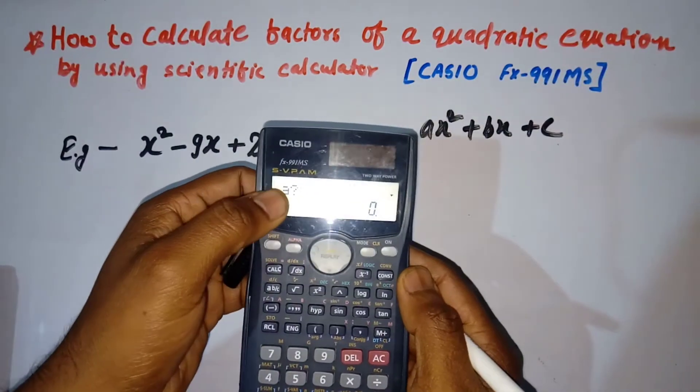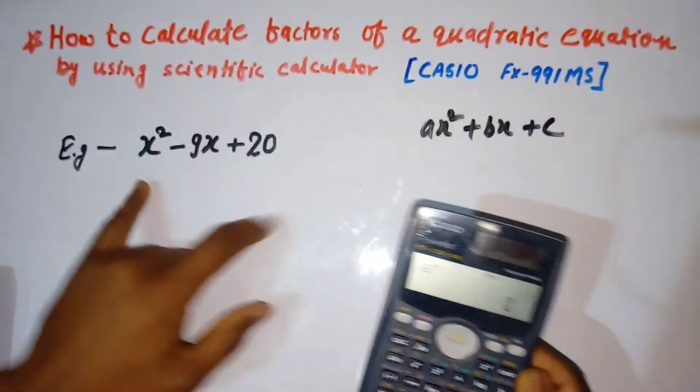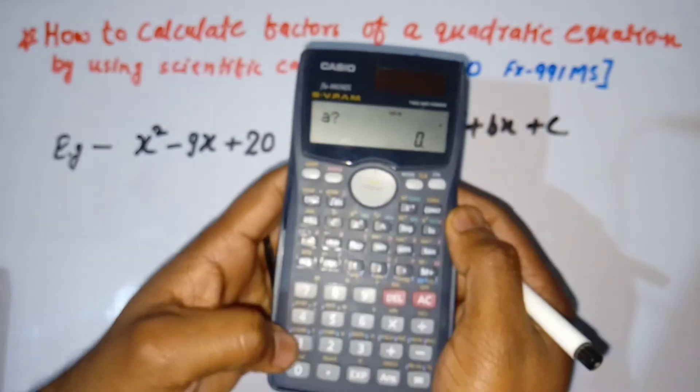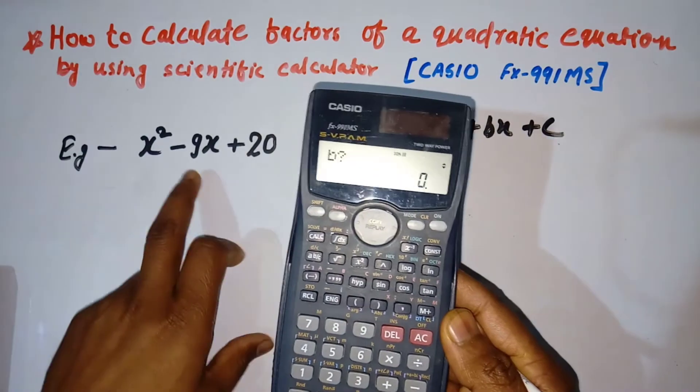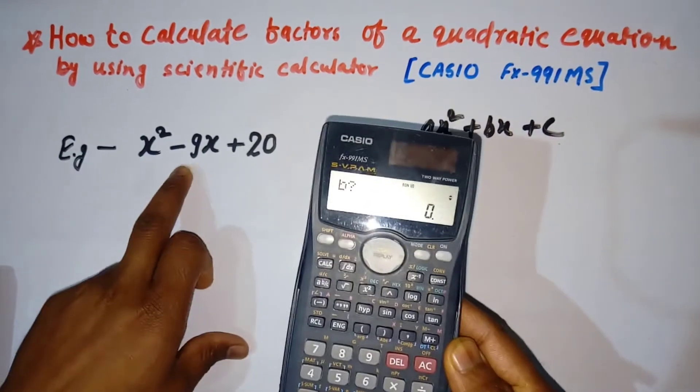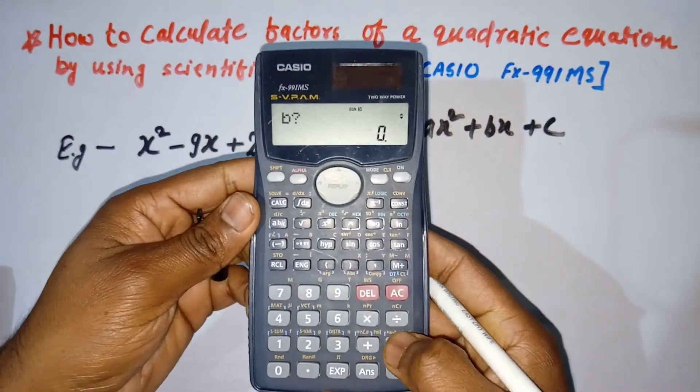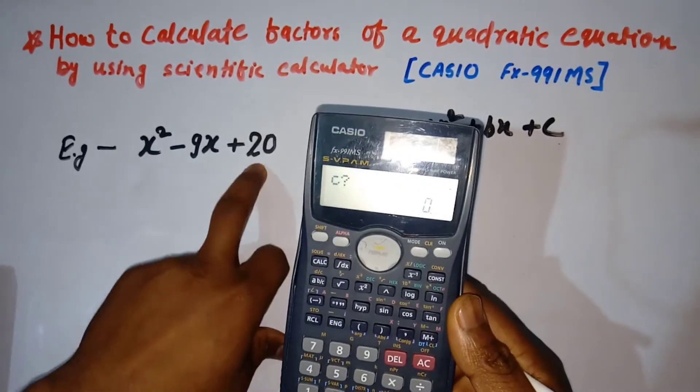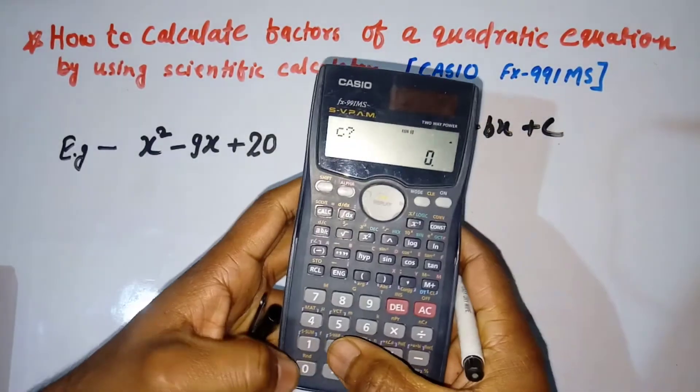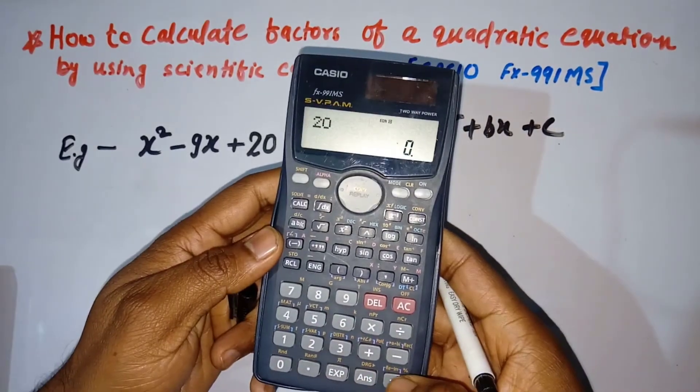It asks you for a. Here a is 1, so press 1 and enter. Then it asks for b. Here b is -9, so press -9 and enter. Then the constant value c. Here c is 20, so press 20 and enter.